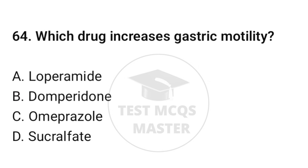Question number sixty-four: which drug increases gastric motility? The correct option is B: Domperidone.